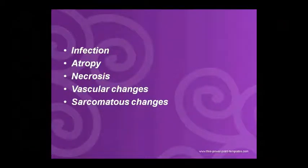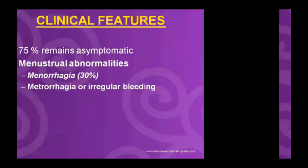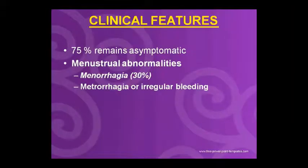Additional secondary changes include infection, atrophy, atrophy with size reduction, necrosis or cell death, vascular changes affecting blood vessel flow, and sarcomatous changes — all linked to uterine fibroid.